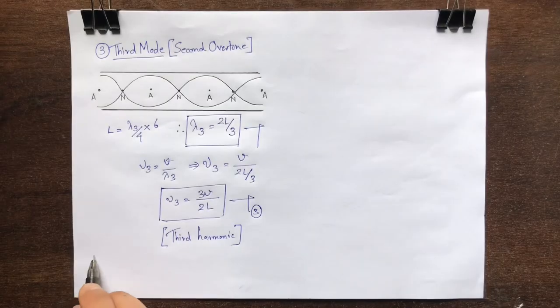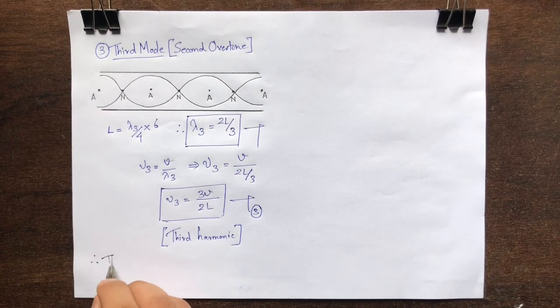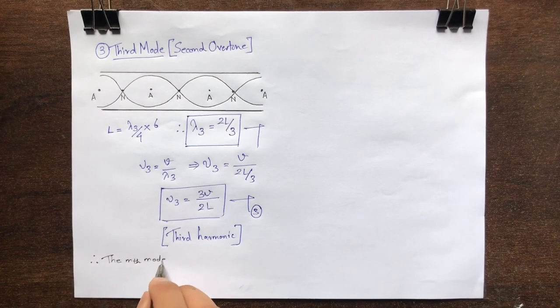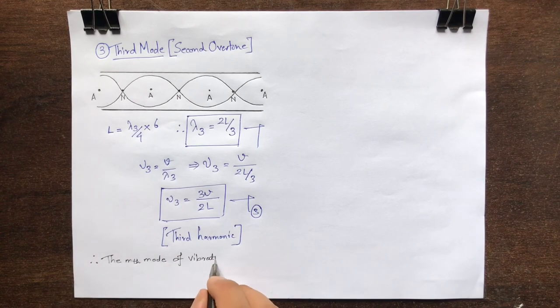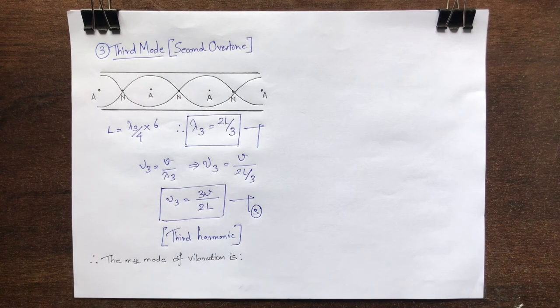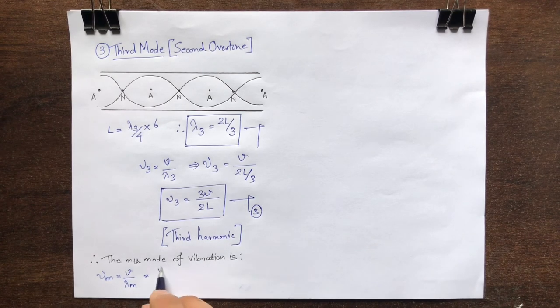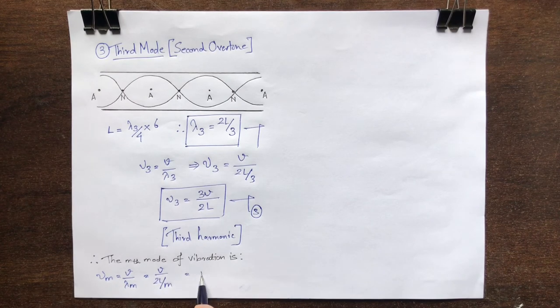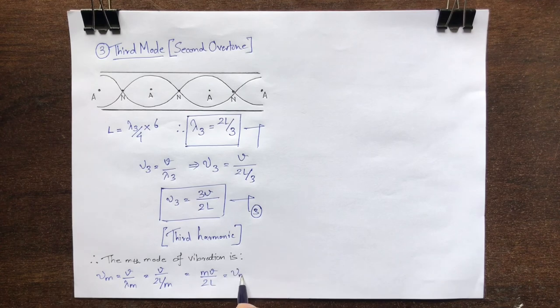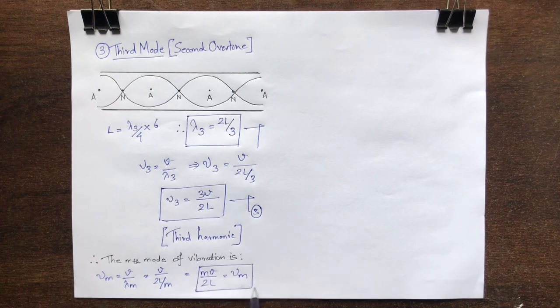Therefore, it follows that the frequency of the m-th mode of vibration is mu_m equal to v upon lambda m, equal to v upon 2L by m, which gives us mv upon 2L. Mark it as equation 4.